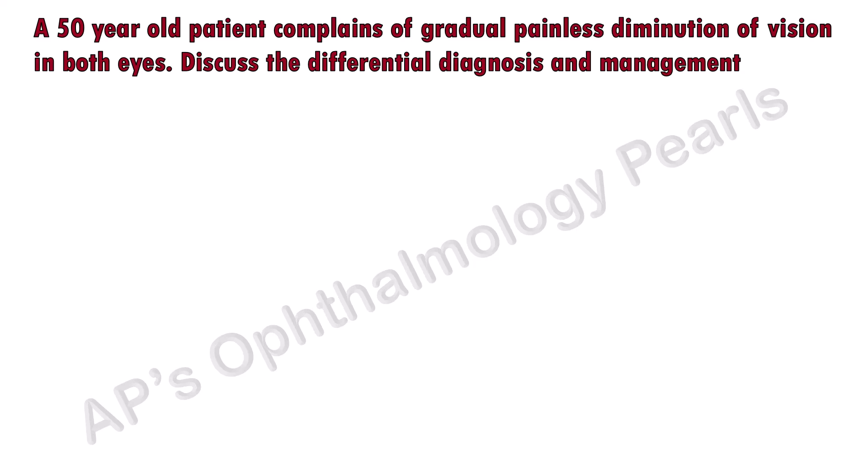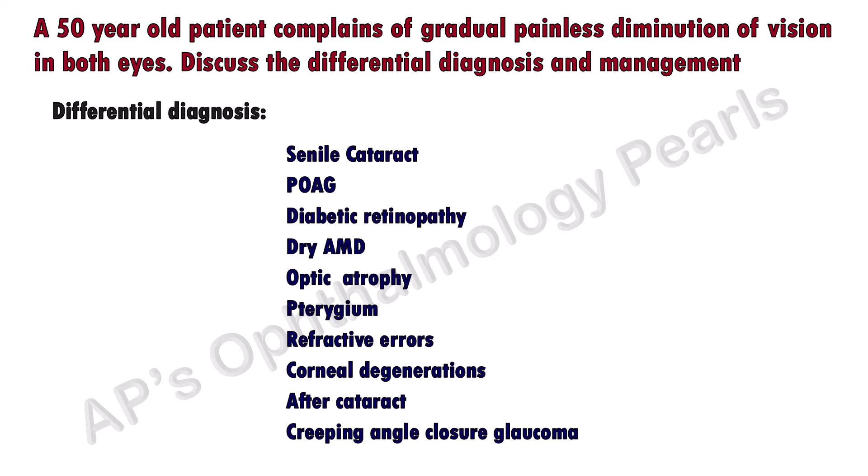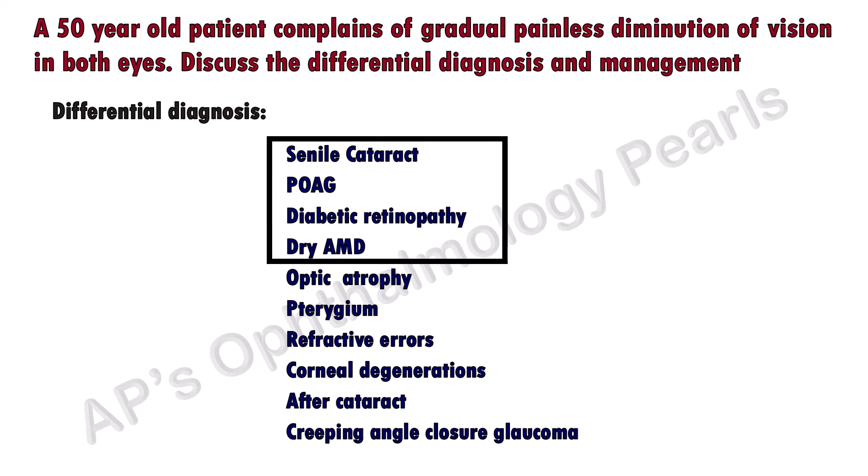This is a common question in undergraduate theory and viva. These are the conditions that one normally considers in a person of this age. These should be mentioned first. Once you mention these conditions, you have to discuss the important differentiating features of each one of these conditions.